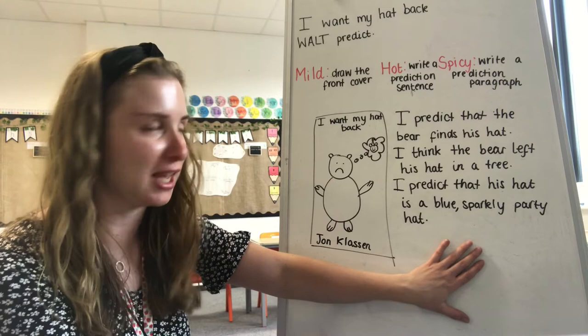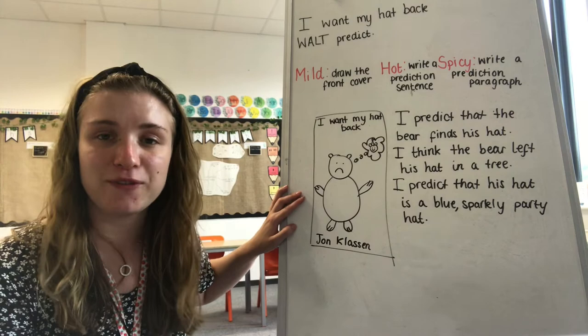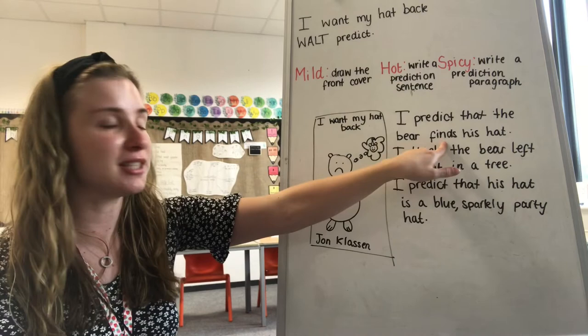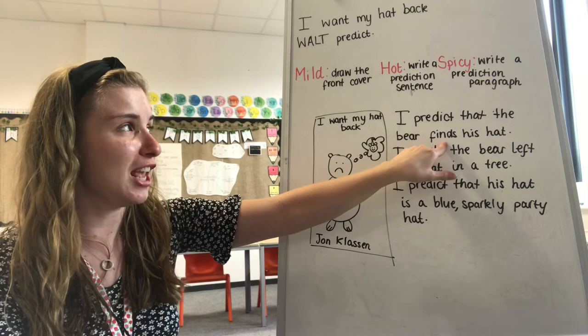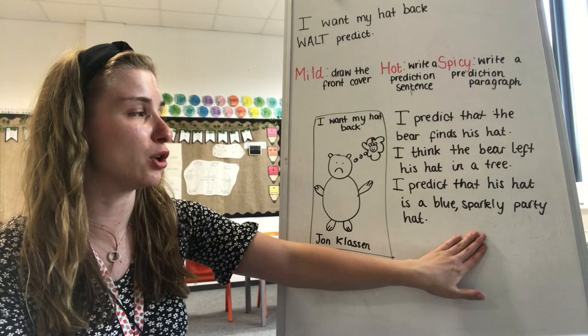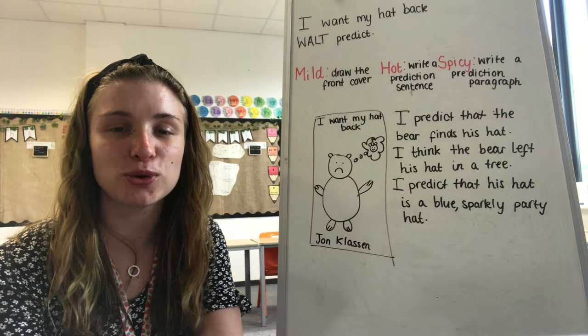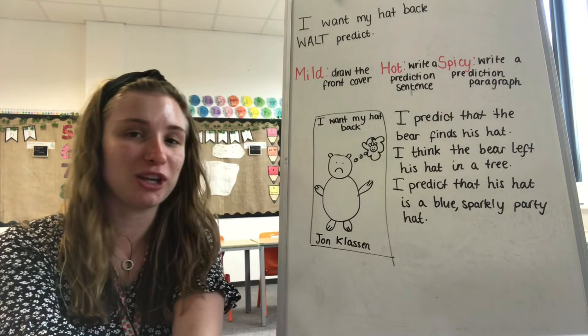So I've shown you how to do mild, hot, and spicy. Remember, we are all starting with mild and we are drawing our front cover. If that's it for you, well done for that. If you want to challenge yourself, write your first sentence about whether you think the bear is going to find his hat. If you decide you've had enough after that, well done. But if you want to challenge yourself that little bit extra and move on to spicy, write your two other sentences — think about where you think his hat is and what you think his hat looks like. Good luck with this challenge today. I'm sure you will all do fantastically. Mrs Fryer and I cannot wait to see your work, so make sure you email over your predictions to us. Have fun and I'll see you for tomorrow's English lesson. Bye.